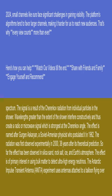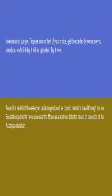The Antarctic Impulse Transient Antenna (ANITA) experiment uses antennas attached to a balloon flying over Antarctica to detect the Askaryan radiation produced as cosmic neutrinos travel through the ice. Several experiments have also used the moon as a neutrino detector based on detection of the Askaryan radiation.